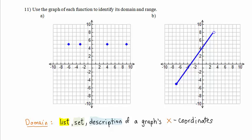Recall that the domain of a function is a list or set or description of the graph's x-coordinates. We can list the x-coordinates of each of these points. This first point right here, its x-coordinate is negative 6. We're not worried about its y-coordinate. The next point, the x-coordinate is negative 3.